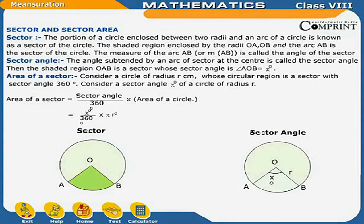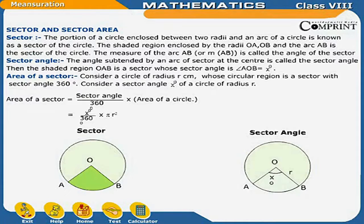Sector and sector area: The portion of a circle enclosed between two radii and an arc of a circle is known as the sector of the circle. The shaded region enclosed by the radii OA, OB and the arc AB is the sector of the circle. The measure of the arc AB is called the angle of the sector. The angle subtended by an arc of a sector at the center is called the sector angle. The shaded region OAB is a sector whose sector angle is angle AOB equal to X degrees. Area of a sector is equal to (sector angle upon 360 degrees) into area of the circle, which is equal to (X degrees upon 360 degrees) into pi R squared.